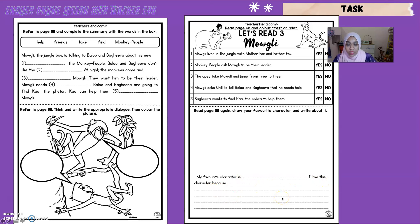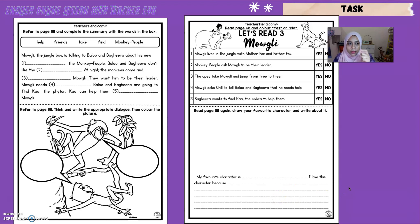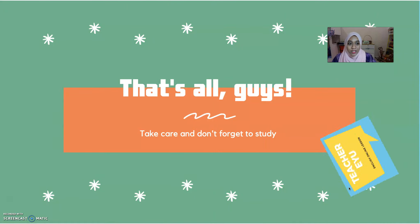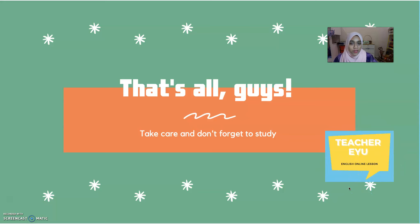Choose one favorite character in the story — draw the character and write about it in the space given. For example, if your favorite character is Mowgli, you can write: 'My favorite character is Mowgli. I love this character because...' and write your reasons. You can either print the worksheets or copy them into your big exercise book. That's all for today — if you have any problems, feel free to ask me through WhatsApp or Telegram. Take care and don't forget to study. Bye!